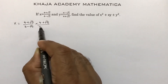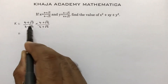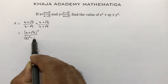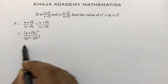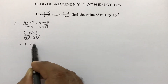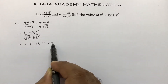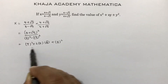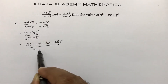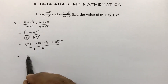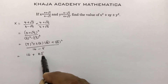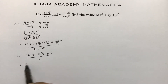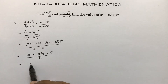The numerator becomes (4 plus root 5) whole square, and the denominator is 4 squared minus root 5 whole squared. Expanding using a squared plus 2ab plus b squared, with a equals 4 and b equals root 5: numerator is 16 plus 8 root 5 plus 5, denominator is 16 minus 5 equals 11. So x equals (21 plus 8 root 5) by 11.